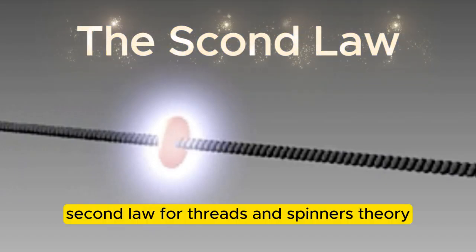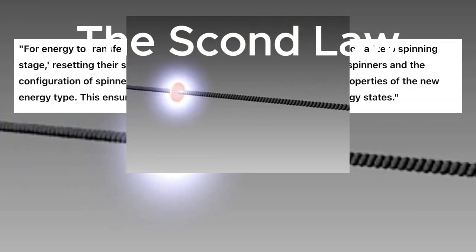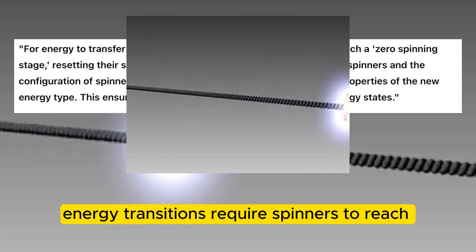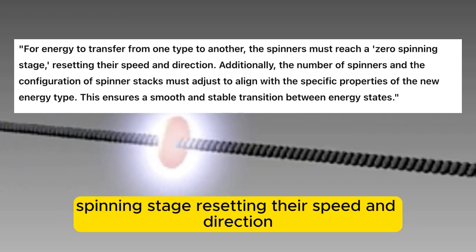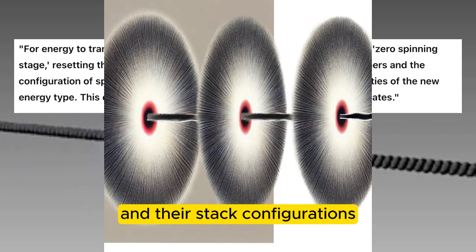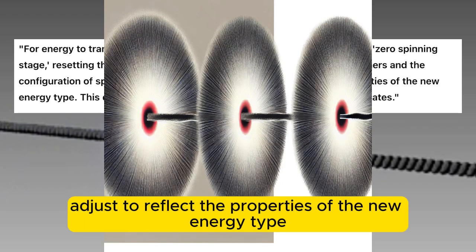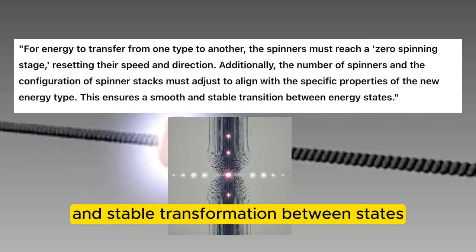Second law for threads and spin-ins theory. Energy transitions require spinners to reach a zero-spinning stage, resetting their speed and direction. Additionally, the number of spinners and their stack configurations adjust to reflect the properties of the new energy type, ensuring an orderly and stable transformation between states.